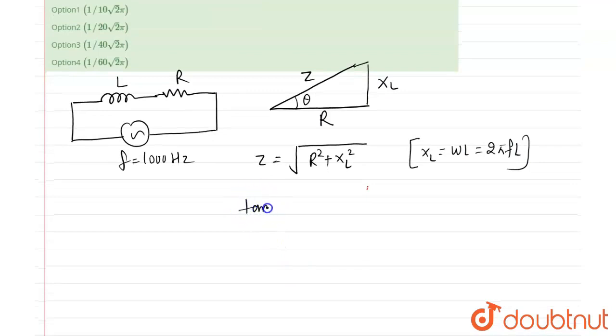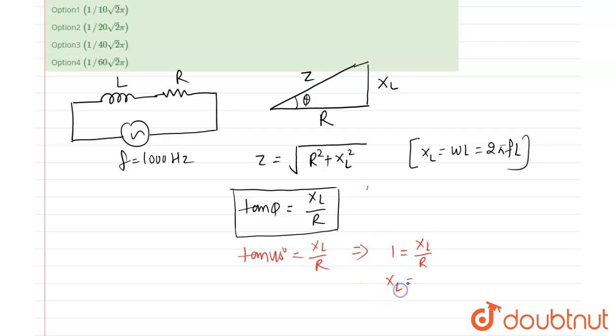And the relation of tan phi is equal to XL upon R. Here phi is equal to 45 degrees according to question. So tan 45 is equal to 1, which means XL upon R is 1, so XL is equal to R.